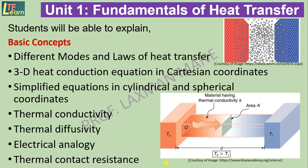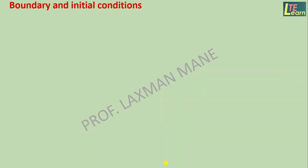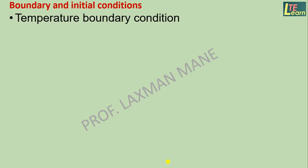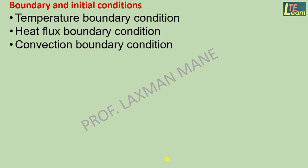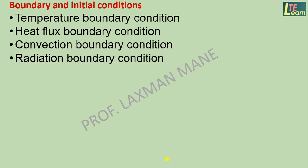Electrical analogy and thermal contact resistance are also covered. The next part of unit number one is boundary and initial conditions. In this, you will be able to explain about various types of boundary conditions like temperature boundary condition, heat flux boundary condition, convection boundary condition, and radiation boundary condition.